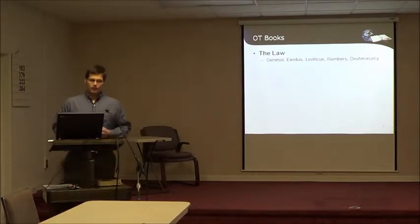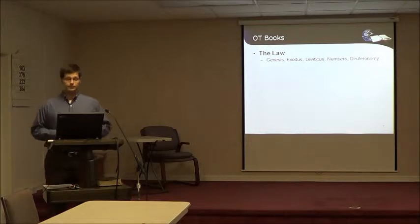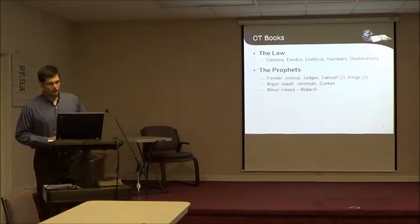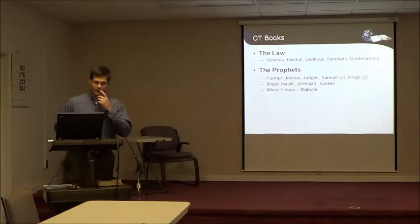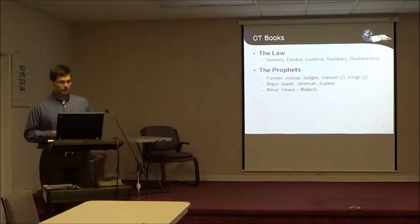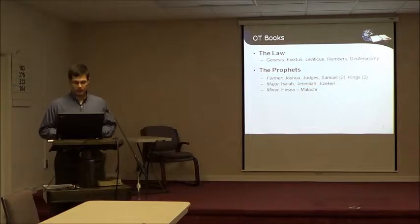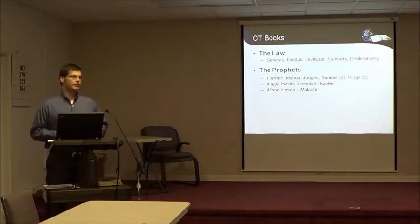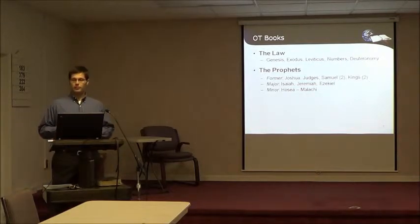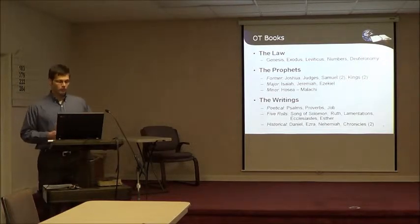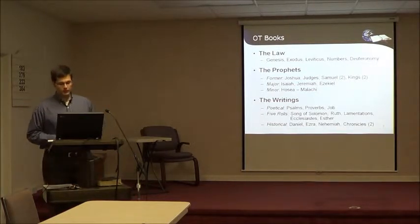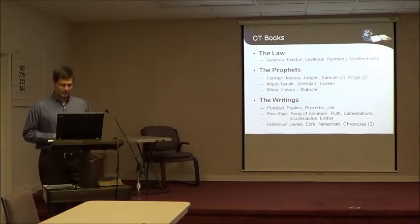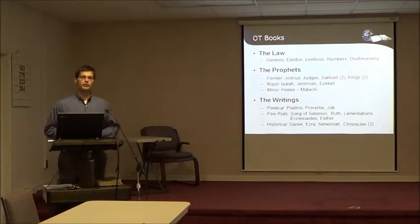Beginning with the Law — the first five books, known as the Torah: Genesis, Exodus, Leviticus, Numbers, and Deuteronomy. The next section, the Prophets, runs from Joshua through Malachi: the former Prophets being Joshua, Judges, two books of Samuel, and two books of Kings; the major Prophets being Isaiah, Jeremiah, and Ezekiel; and the minor Prophets, Hosea through Malachi. Finally, the Writings include poetical writings — Psalms, Proverbs, and Job; the five scrolls — Song of Solomon, Ruth, Lamentations, Ecclesiastes, and Esther; and historical writings — Daniel, Ezra, Nehemiah, and two books of Chronicles.